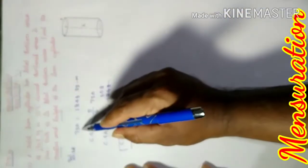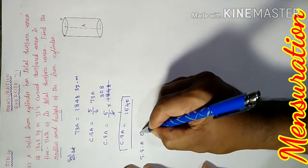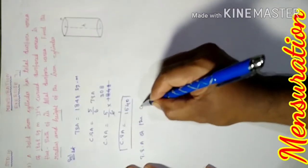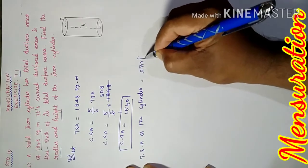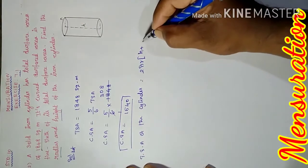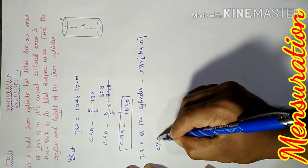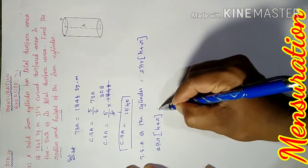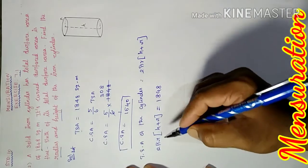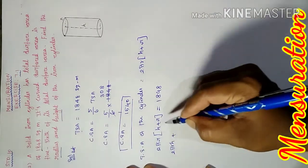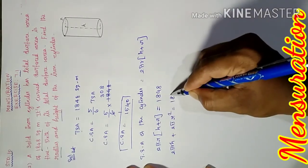Now applying the total surface area formula: total surface area of the cylinder equals 2πr(h + r). Therefore, substituting the values: 2 × π × r × (h + r) = 1848. Expanding: 2πrh + 2πr² = 1848.